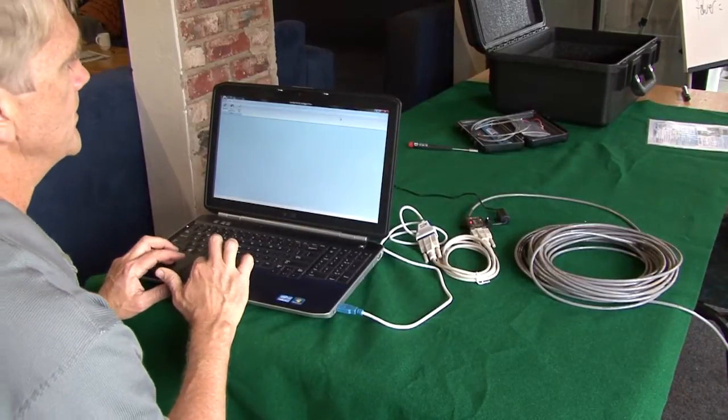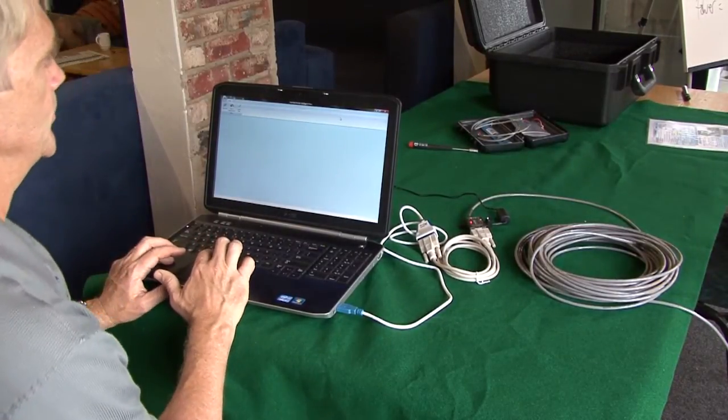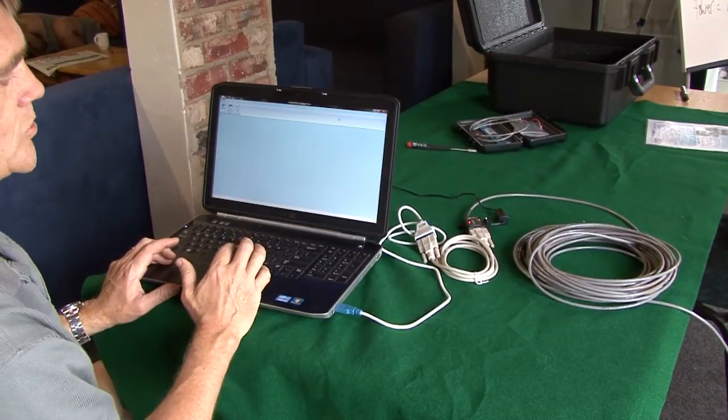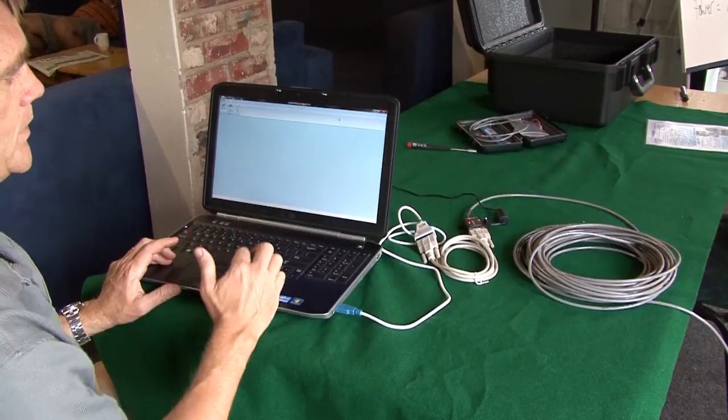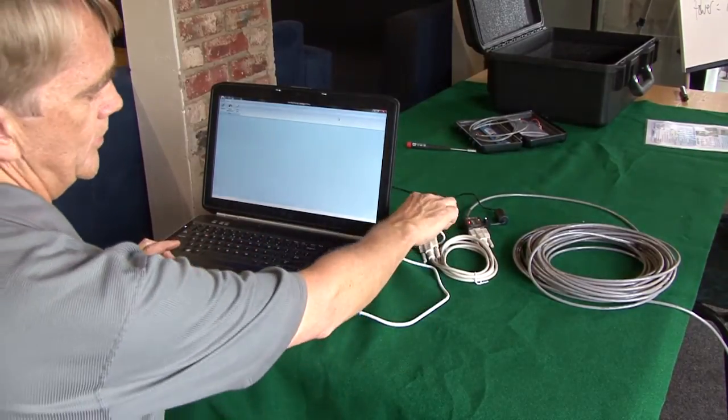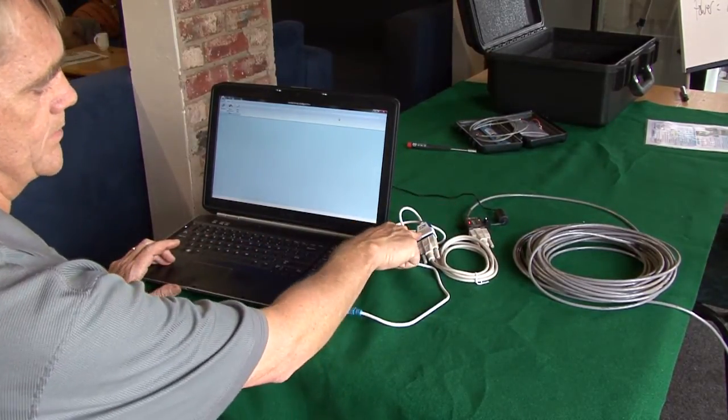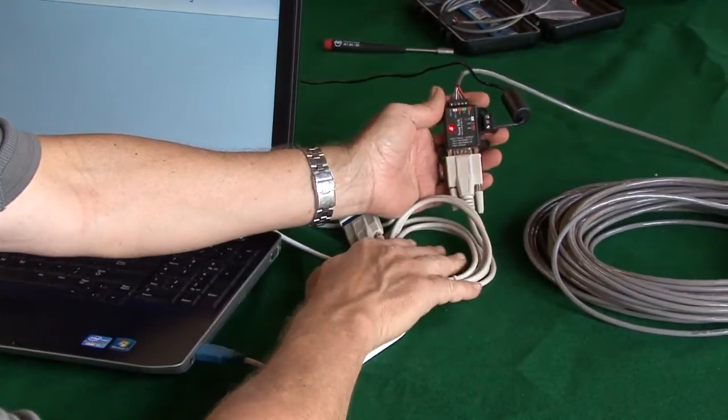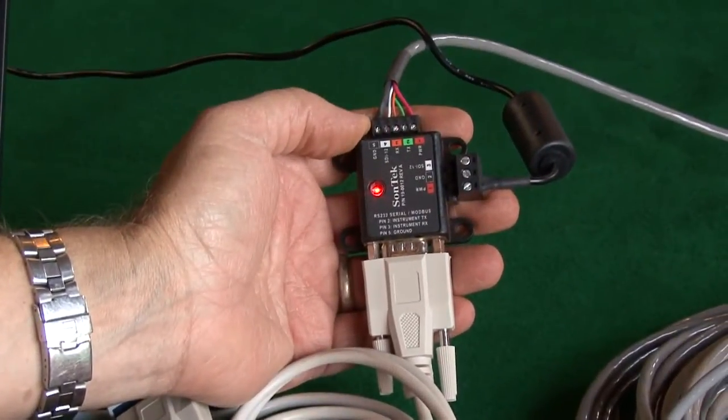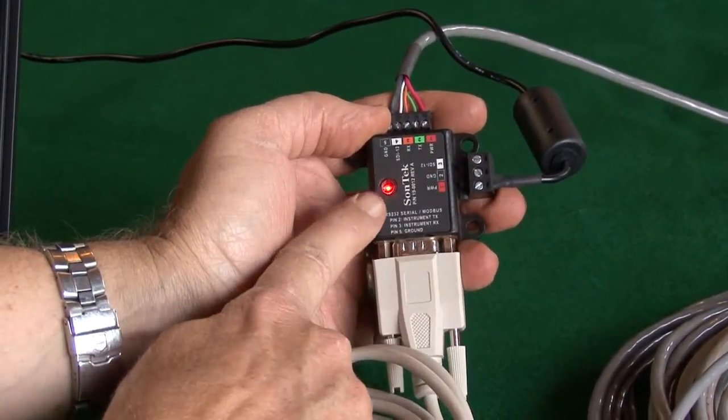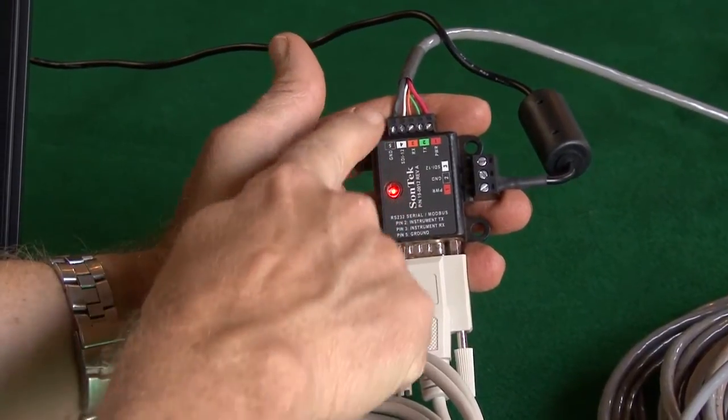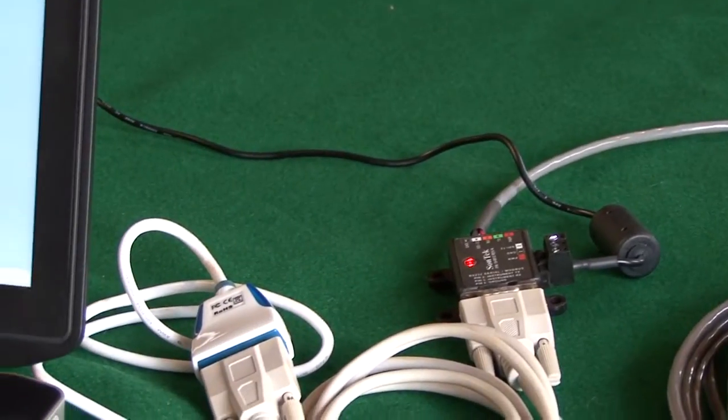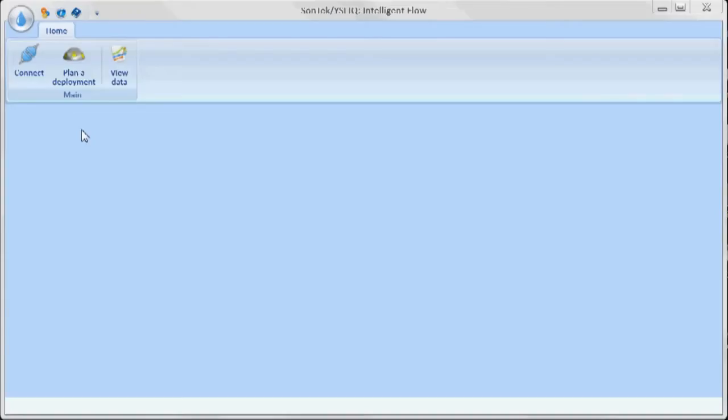What I want to show you here is just a quick example of how to program the instrument once it's been installed. Just briefly, I have the IQ software that I've installed and opened on my laptop. Here's the USB to 232 converter that's plugged into the RS-232 cable. Here's the power and communications interface. Here's where we're supplying the power. You can see the red light indicates that there's power to the system. And this is the terminal blocks with the cable that goes to the IQ that's installed in the water.